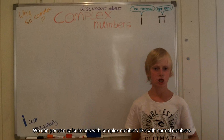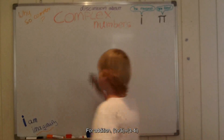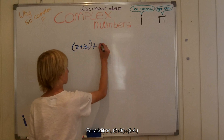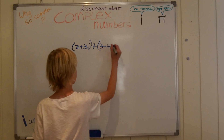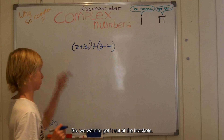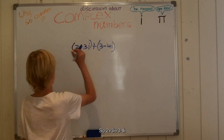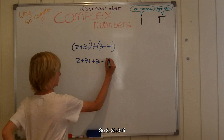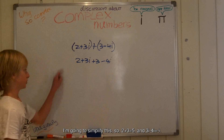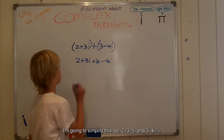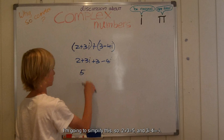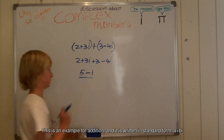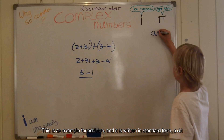We can perform calculations with complex numbers like with normal numbers. I will give you some examples. For addition: 2 plus 3i plus 3 minus 4i. I'm going to simplify this: 2 plus 3 equals 5, and 3i minus 4i equals minus i. So the result is 5 minus i. This is an example for addition, and it is written in standard form a plus bi.